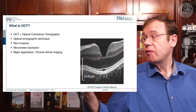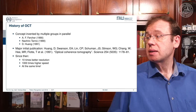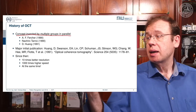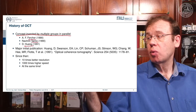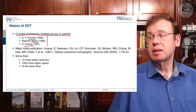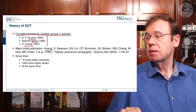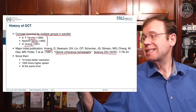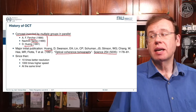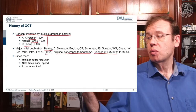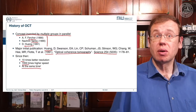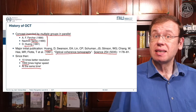This concept was invented by multiple groups in parallel — by Ferchner, by Tano, and by Huang — with publication dates in almost the same year. The major initial publication was done by Huang, titled 'Optical Coherence Tomography,' appearing in Science and cited many thousands of times. Since 1991, we have achieved 10 times better resolution and 1000 times higher speed, simultaneously.